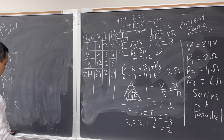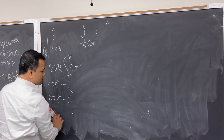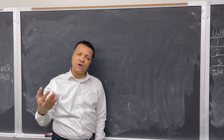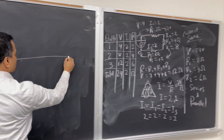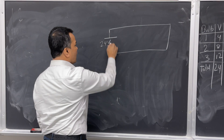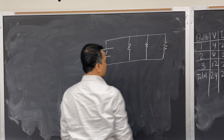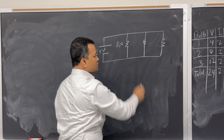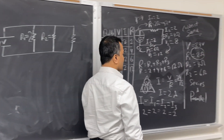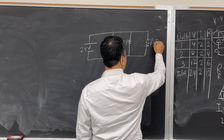Now I'm going to do the parallel circuit with the same information: 24 volts, three resistors — 2 ohms, 4 ohms, and 6 ohms. For a parallel circuit, draw a long rectangle, place the 24-volt battery, and connect bulb 1 at 2 ohms, bulb 2 at 4 ohms, and bulb 3 at 6 ohms in parallel branches.